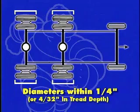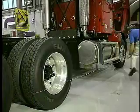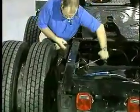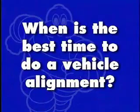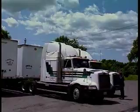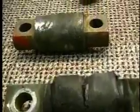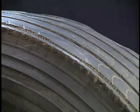Match tires so that the average tire diameter on one axle is within one-quarter inch of the average tire diameter on the other axle. A truck alignment has never been as important as it is today. The best times to do a vehicle alignment are: when new trucks are delivered to your fleet, when trucks come in for your first PM, when worn, bent, or broken suspension parts are replaced, or when irregular tire wear is noticed.